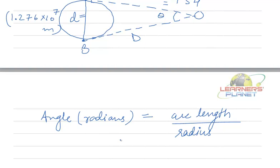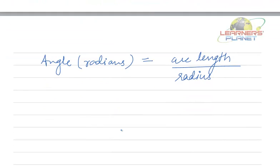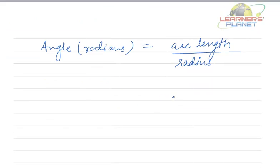In this particular case, let us say the point of observation is moon and you are looking at two points A and B. If you draw an arc, the angle subtended is 1 degree and 54 minutes. This arc length will be approximately equal to the linear distance between A and B which is given to us as 1.276 × 10^7 meters.